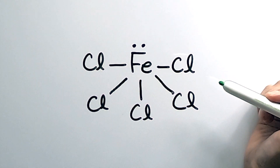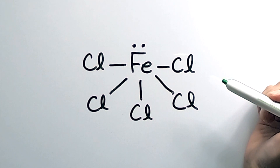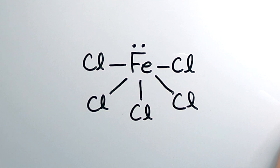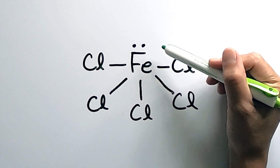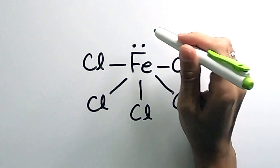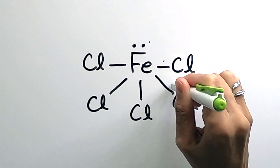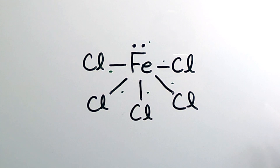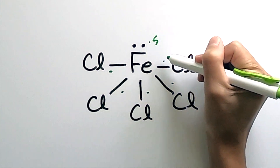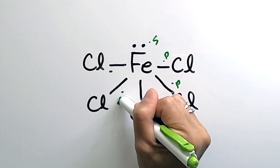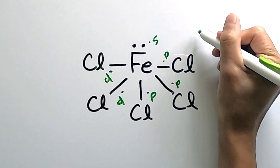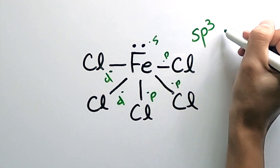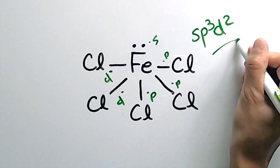Now let's look at an example with a lone pair. Just like before, we determine the number of electron domain regions, which includes lone pairs. This molecule has six electron domain regions. So that would be S, P, P, P, D, D — which makes it sp³d² hybridized.